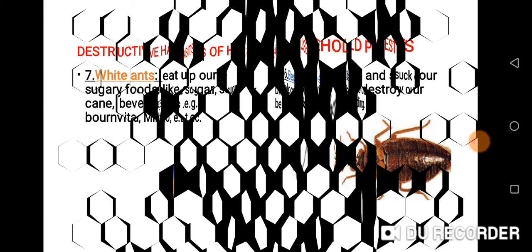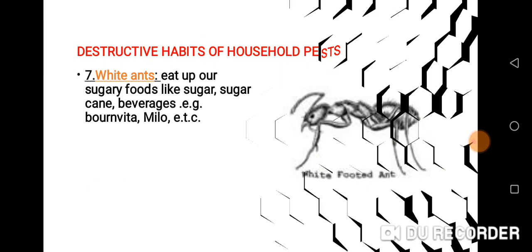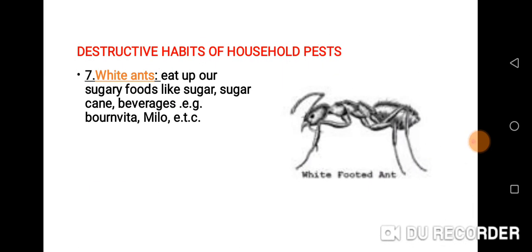White ants eat up our sugary foods — sugar, sugar cane, beverages, for example, Bournvita, Milo, etc. This is what white ants look like.